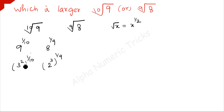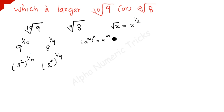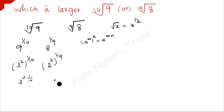You know that a to the power m, whole to the power n, can be written as a to the power m times n. Using that rule, we can write 3 to the power 2 times 1/10, and 2 to the power 3 times 1/9.